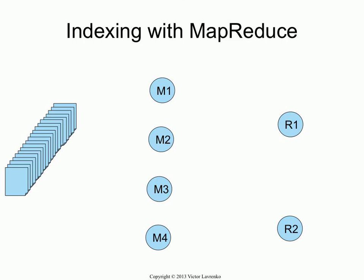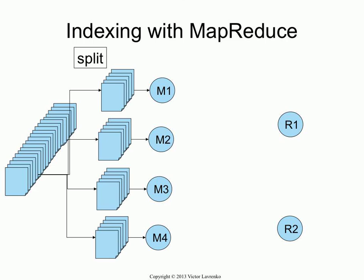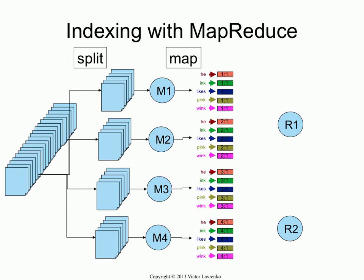If this is my collection, the first step is splitting it into sets of documents. Each set of documents gets picked up by a mapper, which parses the documents and emits key-value pairs. Mapper 1 gets document 1, mapper 2 gets document 2, mapper 3 gets document 3, and so on. So mapper 1 emits key-value pairs where the key is 'he' and that occurs once in document 1, once in document 2, and so on. These values are emitted into the MapReduce architecture.